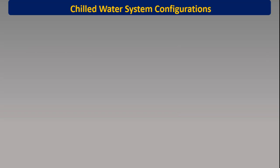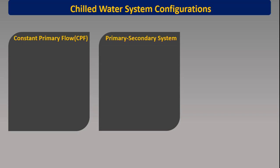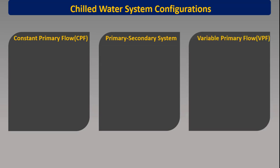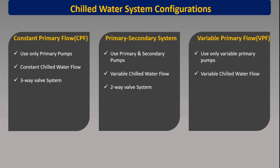Now let's have a look at different chilled water system configurations. First, we have a constant primary flow chilled water system. Then we have a primary-secondary system. And finally, we have a variable primary flow chilled water system. In a constant flow primary chilled water system, we use only primary pumps and water flow is always constant — this is a three-way valve system. The primary-secondary system uses both primary and secondary pumps and is a variable chilled water flow system using two-way valves. The variable primary flow system also uses only variable speed primary pumps and two-way valves.